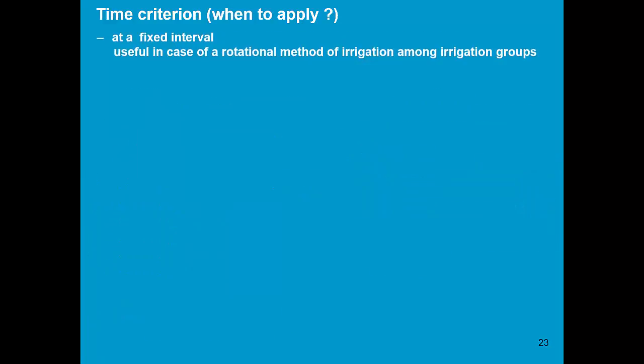Another time criteria can be fixed interval, every 10 days for example. That is useful in case of a rotational method of irrigation among irrigation groups.